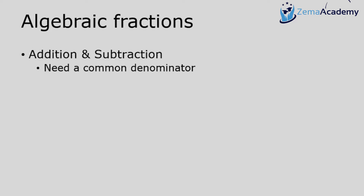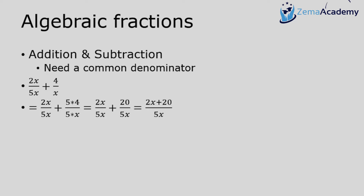For addition and subtraction, we need a common denominator. Here I have the expression 2x over 5x plus 4 over x. I can't do anything until they have a common denominator. I'll multiply the right fraction top and bottom by 5, giving 20 over 5x, so I can add the numerators to get 2x plus 20 all over 5x.